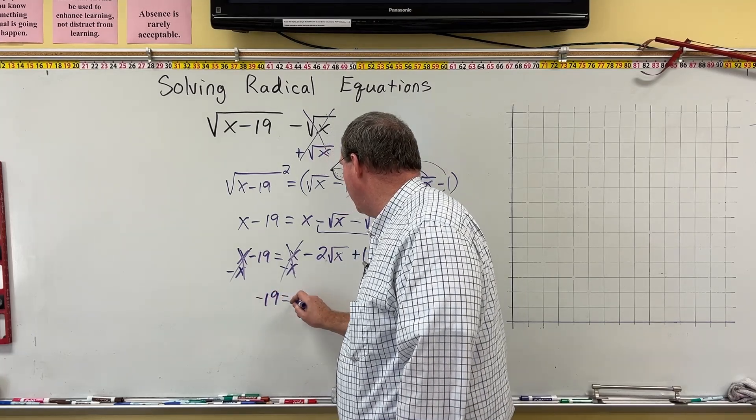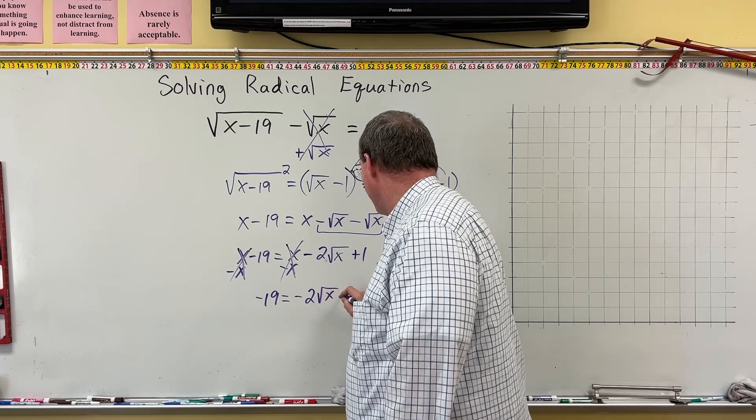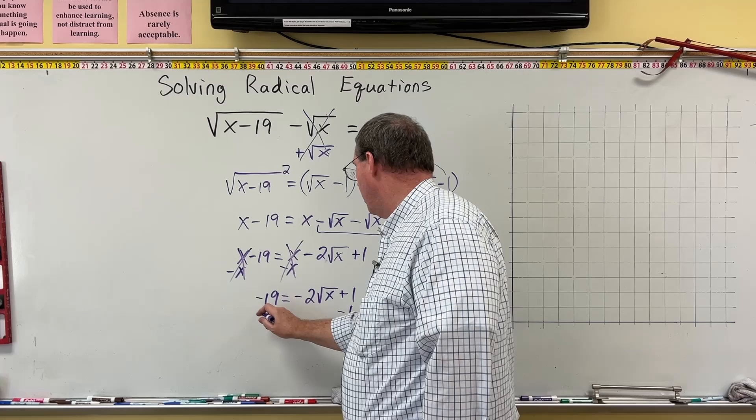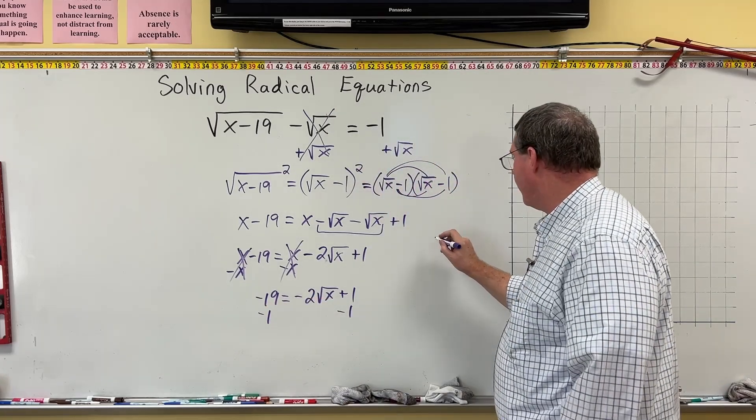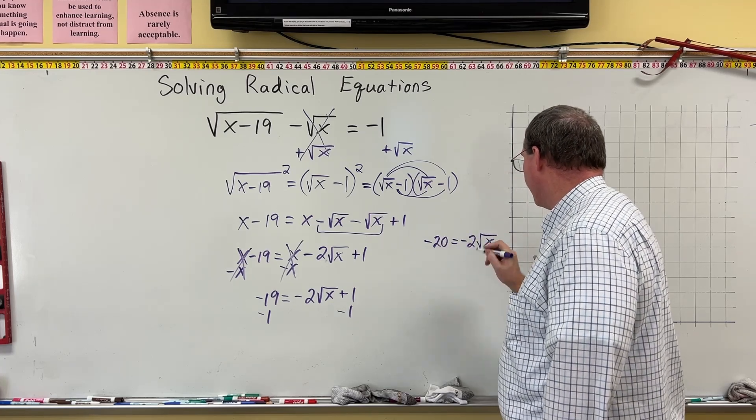We now have negative 19 is equal to negative 2 square root of x plus 1. And now if I subtract 1 here and subtract 1 here, I'm going to move over here. That gives me negative 20 is equal to negative 2 square root of x.